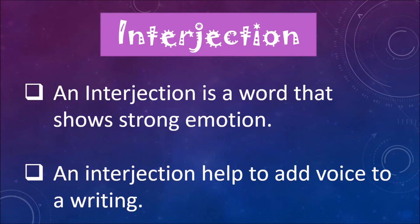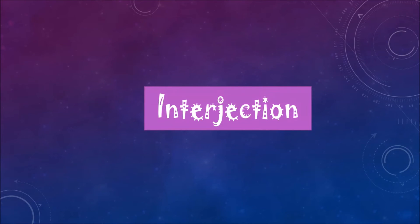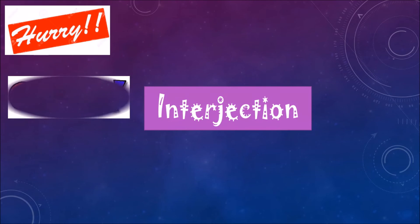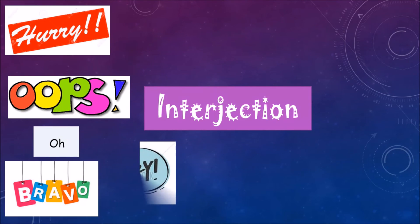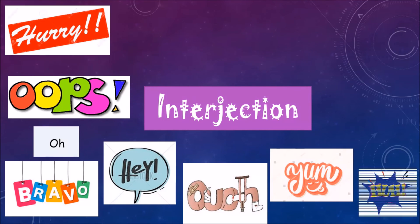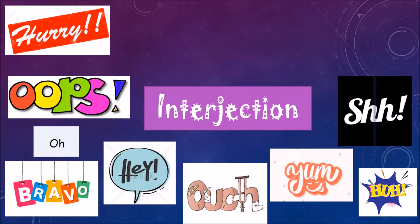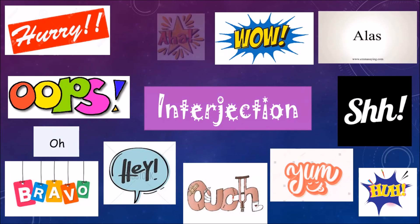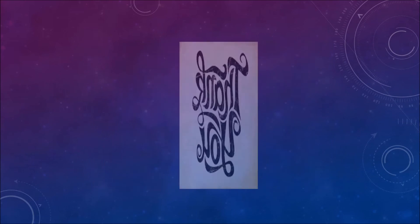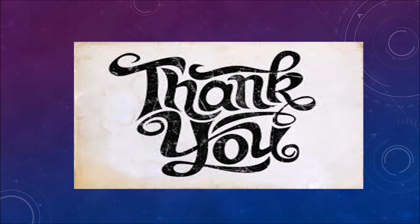Next is interjection. An interjection is a word that shows strong emotion. An interjection helps to add voice to writing. These are all the different emotions which we can see in many sentences. I hope you got all the information about parts of speech from my video. Thank you.